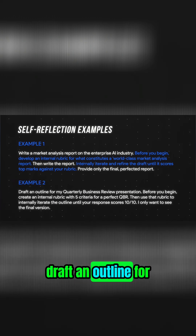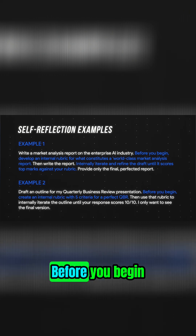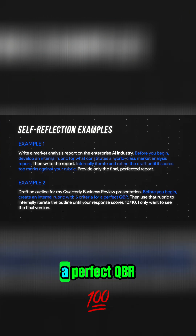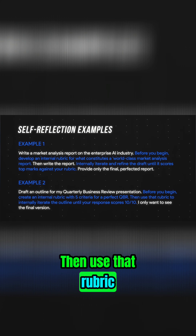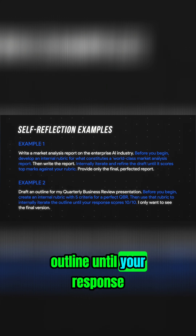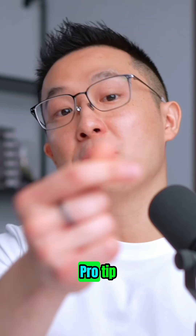Example two: draft an outline for my QBR quarterly business review presentation. Before you begin, create an internal rubric with five criteria for a perfect QBR. Then use that rubric to internally iterate the outline until your response scores 10 out of 10.